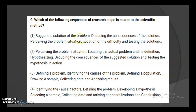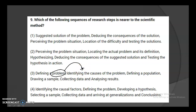Ninth question: which sequence of research steps is nearest to the scientific method? Option 3 states: define a problem, identify the cause of the problem, define a population, draw a sample, collect data, and analyze the results. In the scientific method, you first define the problem, then identify its causes, focus on minimizing those reasons, define the population and collect a sample, and then analyze the results. So the third option is correct.